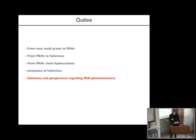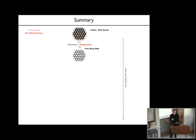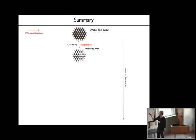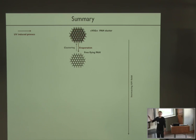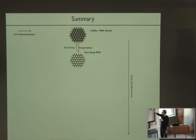Let me now summarize. You start with what we call very small grains—they could be PAH clusters, but it's unclear. You can imagine they are not beautiful symmetric PAH clusters but that they can have aliphatic chains and may not be as symmetric. Under UV radiation you evaporate these grains and make free-flying PAH molecules.